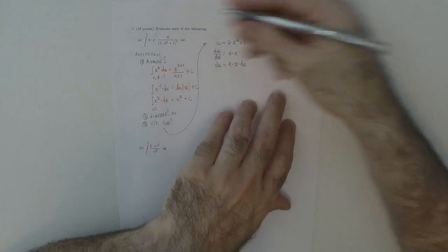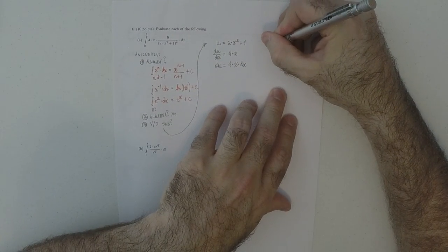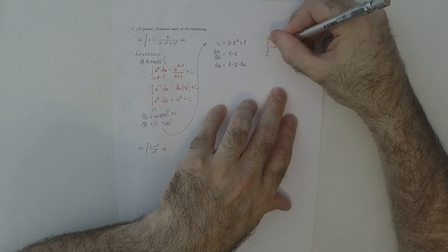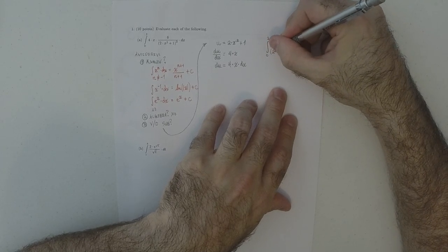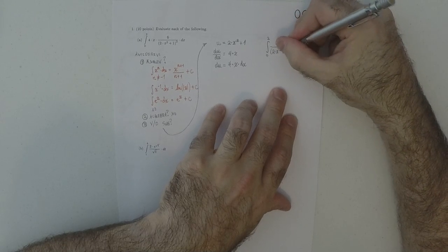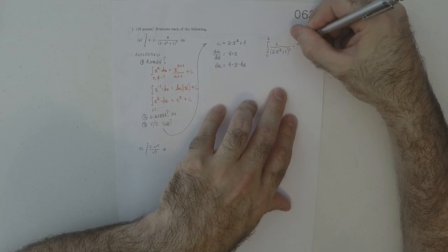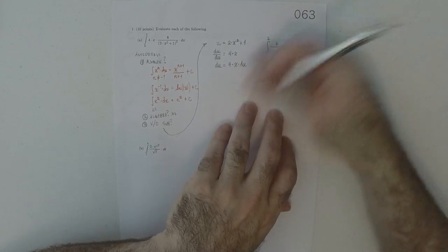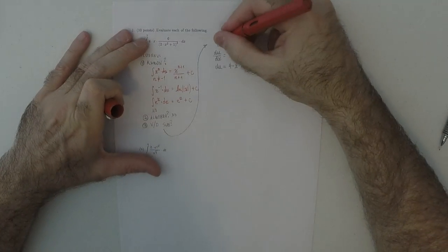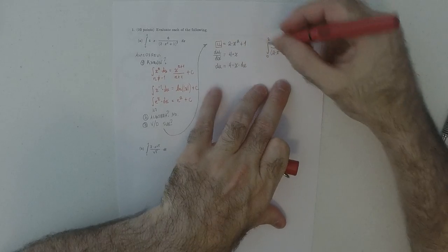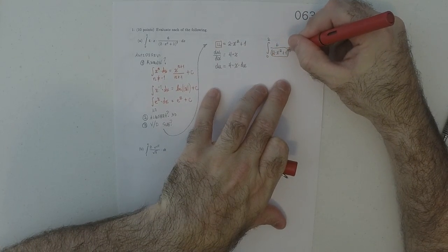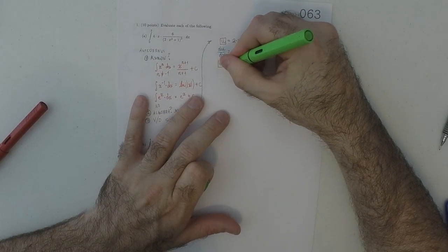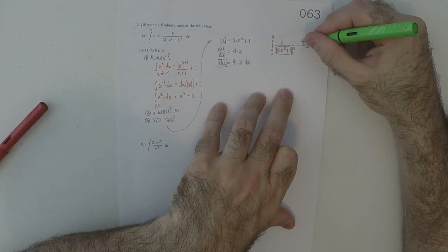So then, rewriting that integral just a little bit. So that's integral 0 to 2. And then, I'm going to write 6 over 2x squared plus 1 cubed. And then, the 4x dx. So, writing it like that, what we're saying is that we're going to take this u and we're going to replace all of that.